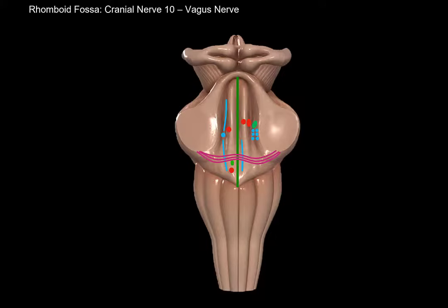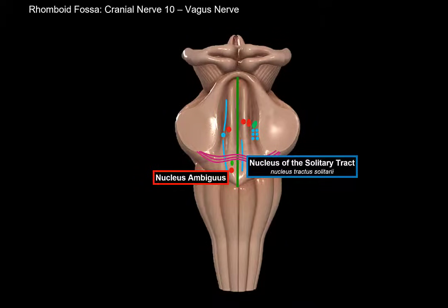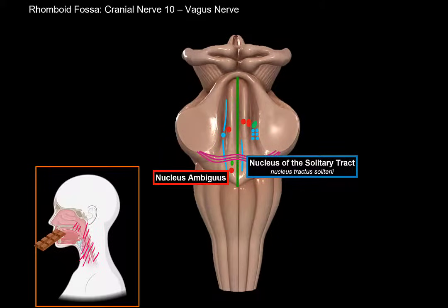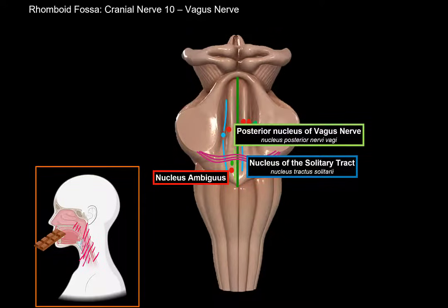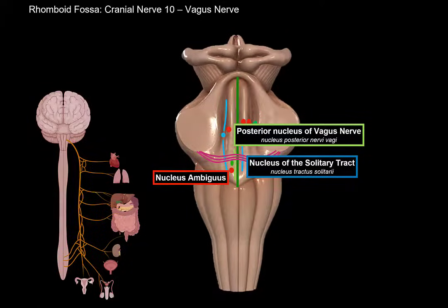Next is the 10th cranial nerve, the vagus nerve. The vagus nerve also contains three types of fibers: motor, sensory, and parasympathetic. The motor and sensory parts are associated with the nucleus ambiguus and the nucleus of the solitary tract, innervating the muscles of the pharynx, soft palate, and larynx, as well as sensing taste from the posterior third of the tongue. The parasympathetic fibers come from the posterior nucleus of the vagus nerve. This is the only cranial nerve that leaves the cranium to innervate all the organs of the thorax and abdomen — reducing heart rate, increasing gastric motility and absorption, and performing other parasympathetic functions.